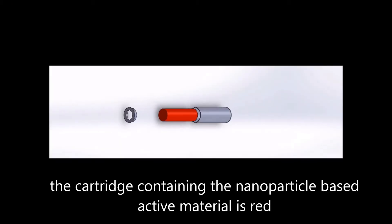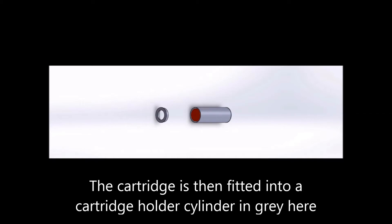The filter consists of a cartridge, shown in red, which harbors the active material composed of nanoparticles and their composites, capable of extracting heavy metals from water.